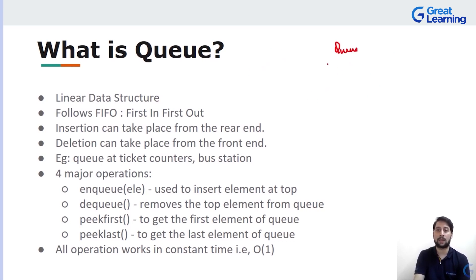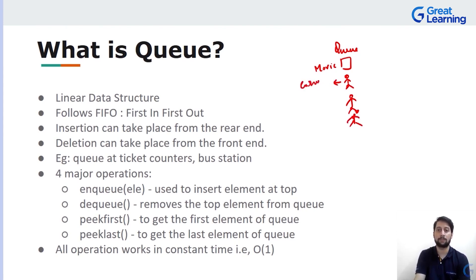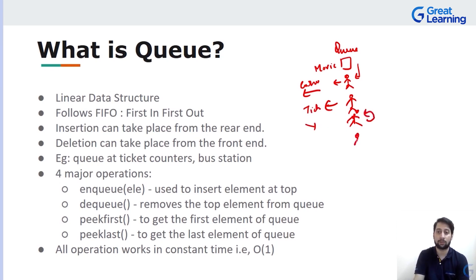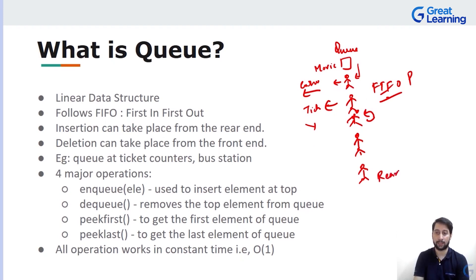Let's suppose you are in a queue waiting to buy a movie ticket. The first person in the queue will be the first person to get their ticket and will be out of the queue. The next person in queue gets their ticket next. A new person coming in goes to the back, not ahead of others — this is the FIFO principle. Insertion always takes place from the rear end and deletion always takes place from the front end.